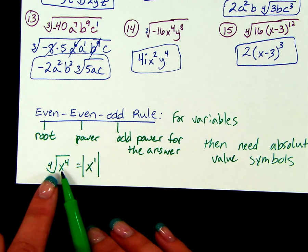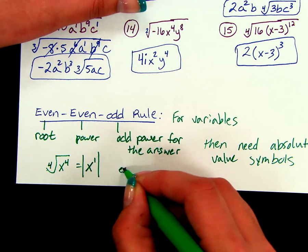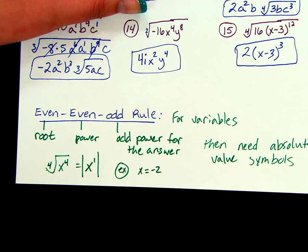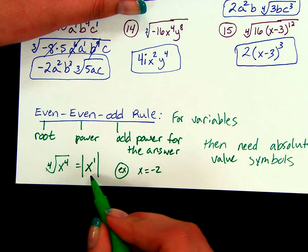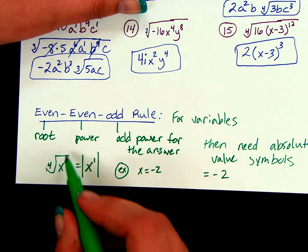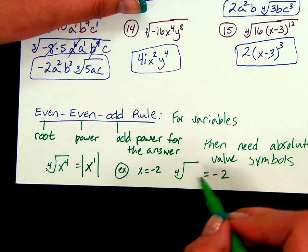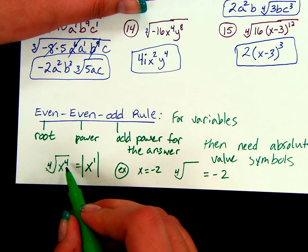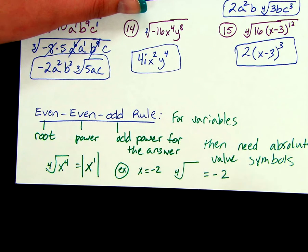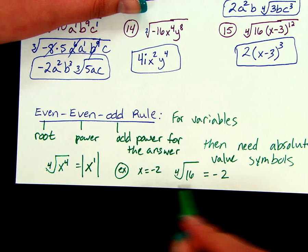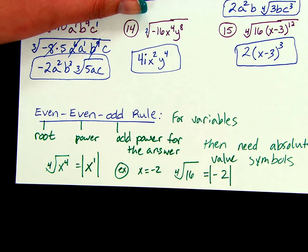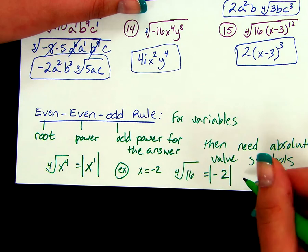Because if I substitute — let's say I substitute in negative 2. If I go directly to the answer, I would have something equal to negative 2. But when I look at the original expression, if I'm doing the fourth root of negative 2 to the fourth, 2 to the fourth is going to be 16. So if I take a negative times itself four times, it becomes 16. We know that this situation can't happen, so to help with that, we need the absolute value symbols. And then now we have a true statement.